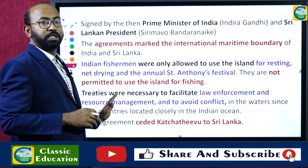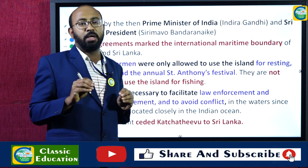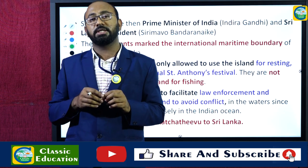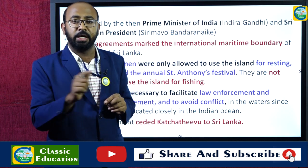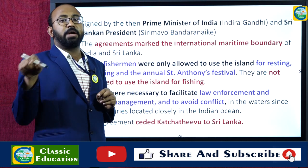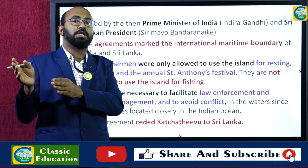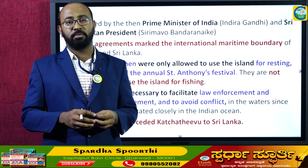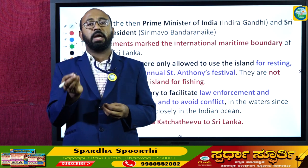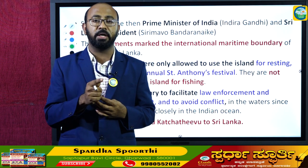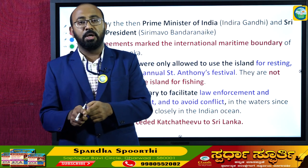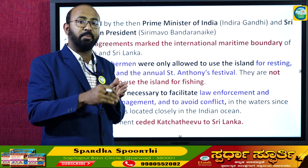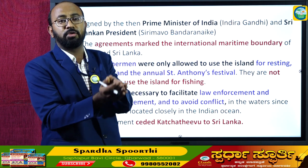Most significantly, the 1974 agreement ceded Kachitivu to Sri Lanka. Earlier, during British times, Kachitivu belonged to the Indian government — even Ceylon had accepted India's sovereignty over it. But through the 1974 boundary settlement, India ceded this island to Sri Lanka. From that point, Kachitivu came under the control and sovereignty of Sri Lanka.